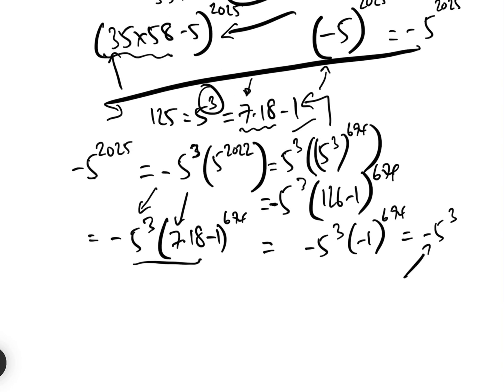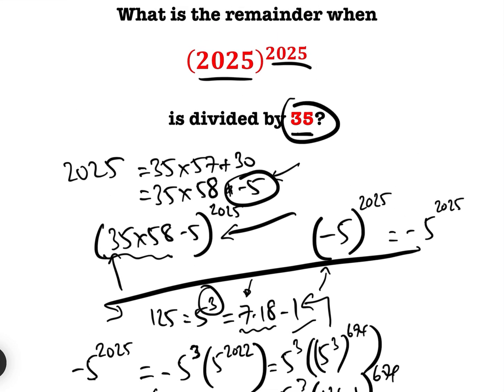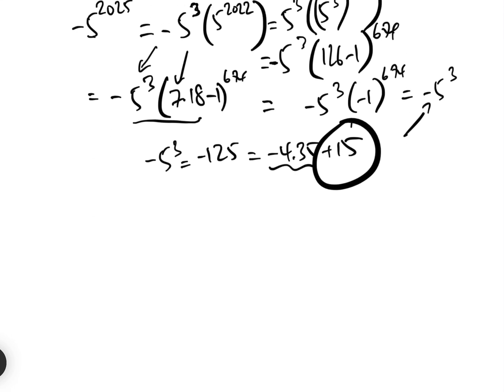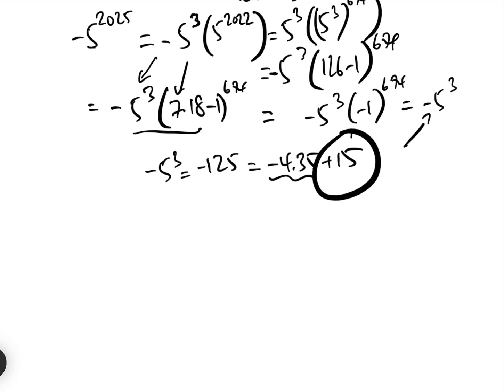We're almost there now. All we need to do is put this as a factor of 35. Now minus 5 cubed is equal to minus 125, which equals minus 4 times 35 add 15. And so therefore, this is a multiple of 35. The only thing we're left with is 15. So the remainder is 15. That's method 1. It's a little bit difficult. I prefer method 2. So there's method 1. Let's have a look at method 2.